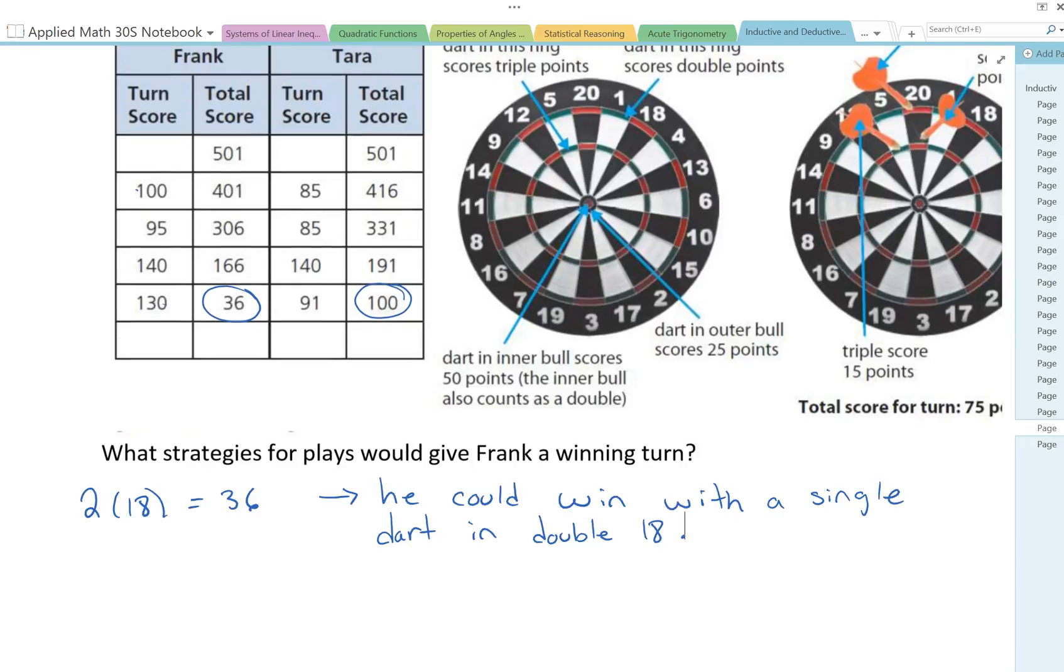So the first thing I thought of was well here's 18, so if he could score in the double 18 out here then he'd be done. But what happens if he hits the 18 and not the double 18?